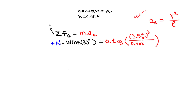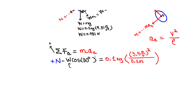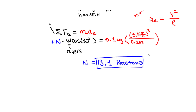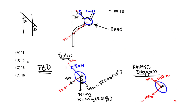Substituting everything: N − 0.981·cos(30°) = 0.1 × (3.5²/0.1). The right side gives 0.1 × 12.25/0.1 = 12.25. Adding 0.981·cos(30°) ≈ 0.85, we get N ≈ 13.0995, which is about 13.1 newtons. The units check out as newtons. So the normal force on the bead is approximately 13.1 N — answer choice B.